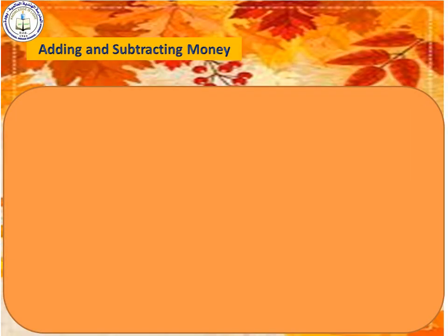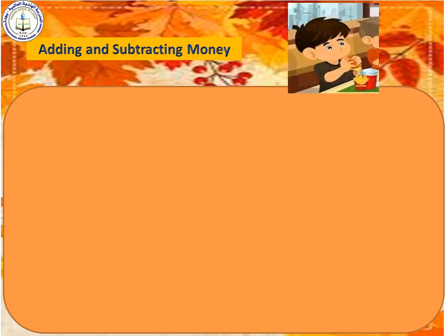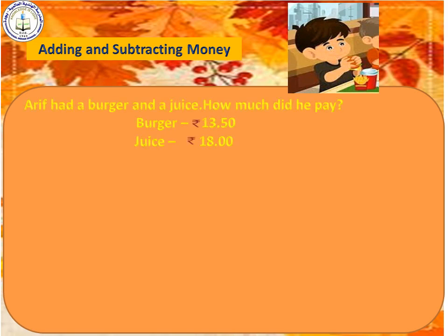First, adding and subtracting money. Children, do you all like to go to a restaurant? Here Arif went to a restaurant. He had a burger and a juice. How much did he pay? When you are going to a restaurant, how will you pay? You should add the prices of foods which you have eaten. Here also we can add the prices of these two items.